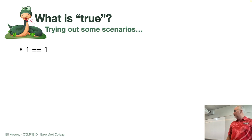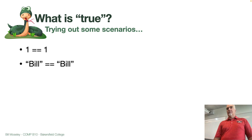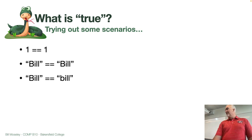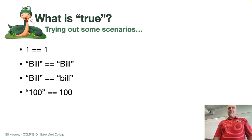So here's some scenarios. True or false? True. What about this one? True. What about this one? False. Why? Yeah, because a lowercase b and uppercase b are not the same thing. What about this one? False. We got an int and a string, which are not the same. True or false? True. 10 is greater than 5.